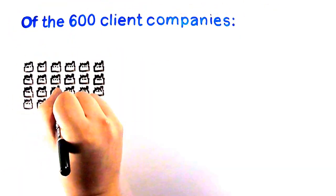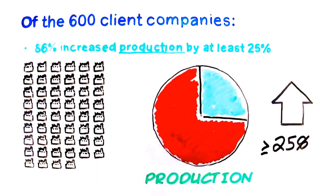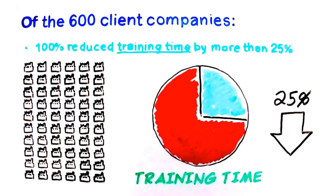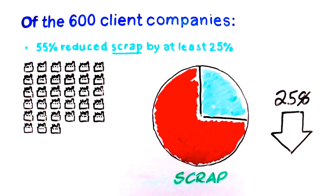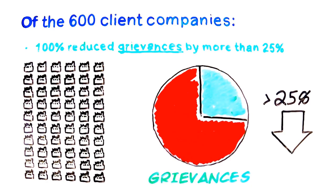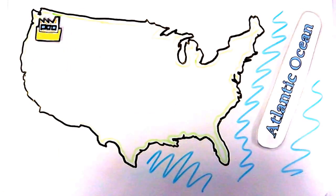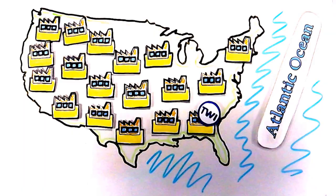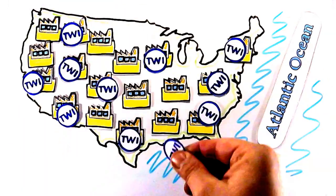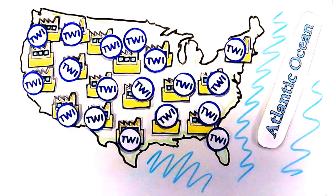There were over 600 client companies utilizing TWI. Of these 600 companies, 86% increased their production by at least 25 percent, 100% reduced their training time by more than 25 percent, 88% reduced their labor hours by over 25 percent, 55% reduced scrap by at least 25 percent, and 100% reduced grievances by more than 25 percent. Productivity in the United States was at an all-time high, making the U.S. an industrial powerhouse of the world. The TWI programs were instrumental in winning the war because the United States was able to make so much material so quickly.